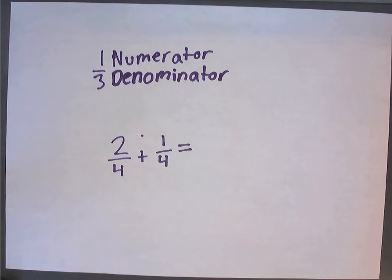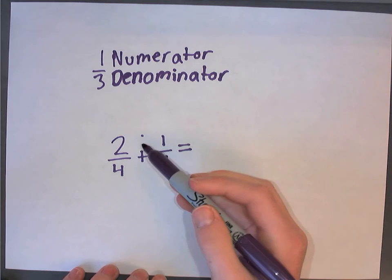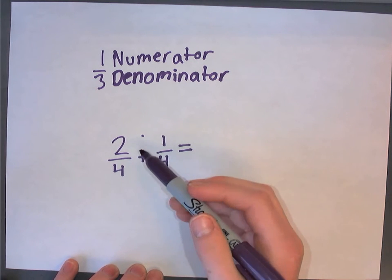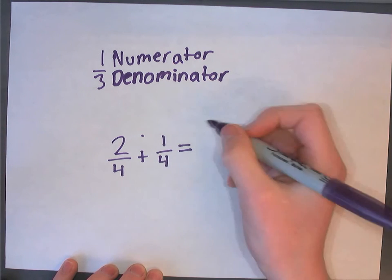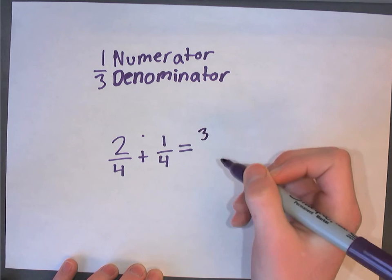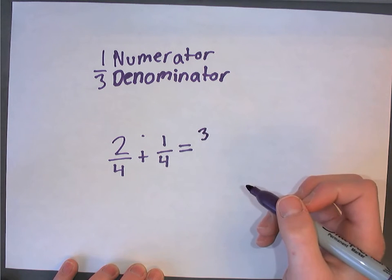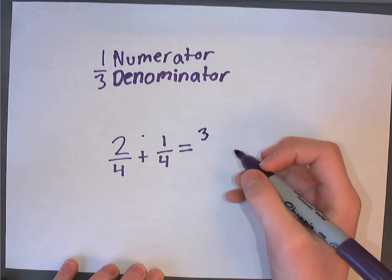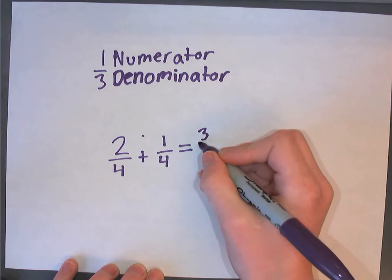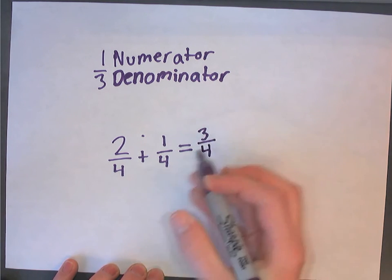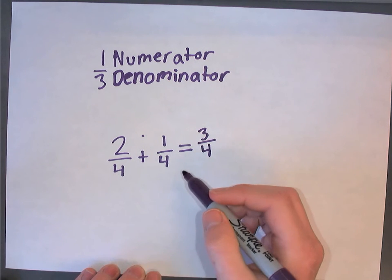Here is how to answer this equation. Remember, we look at the numerators and add them together. In this case, it is 2 and 1. So when we add both of them together, we get the number 3. Now we put the number 3 over the number 4 to make our answer, which is 3 fourths because of the like denominators.